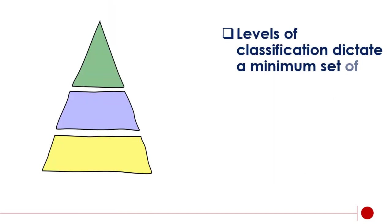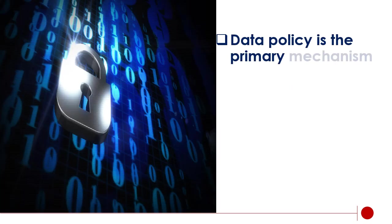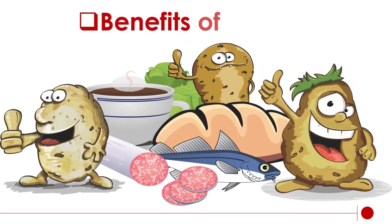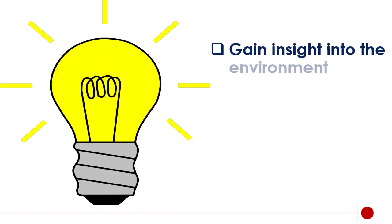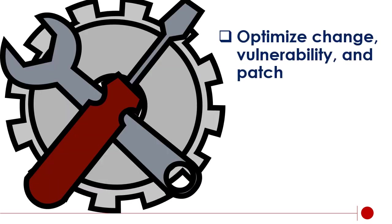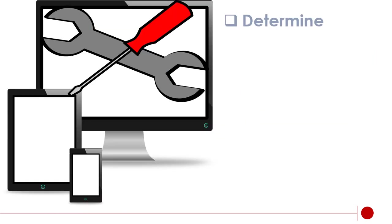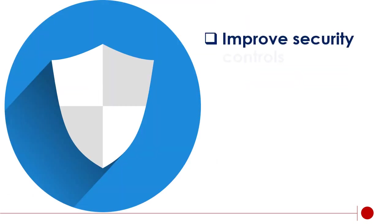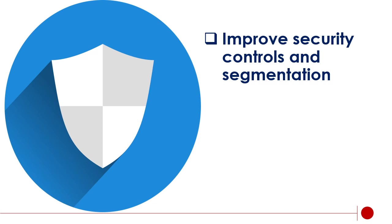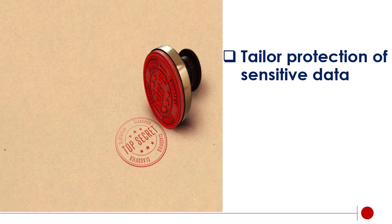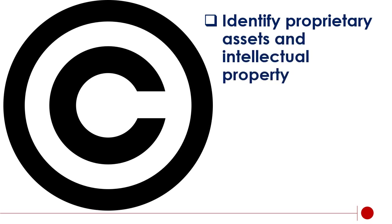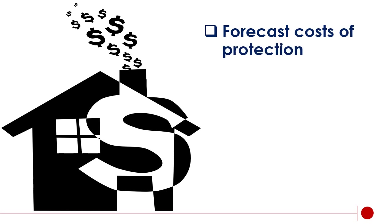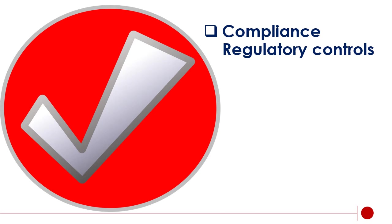Levels of classification dictate a minimum set of security controls. Data policy is the primary mechanism that establishes classification levels. Benefits of classification include making an accurate asset inventory, gaining insight into the environment, optimizing change, vulnerability and patch management programs, determining the best maintenance windows, improving security controls and segmentation, tailoring protection of sensitive data, identifying rogue assets, and understanding potential risks posed by vulnerabilities. Additional benefits include identifying proprietary assets and intellectual property, forecasting costs of protection, and ensuring compliance with regulatory controls.